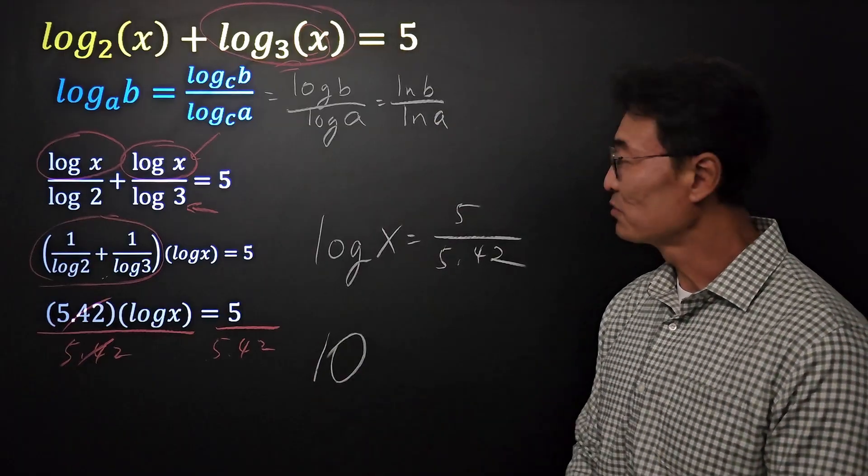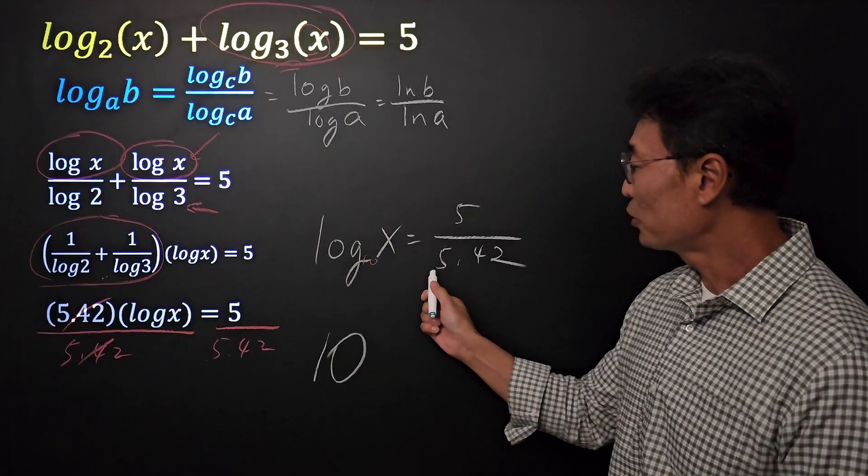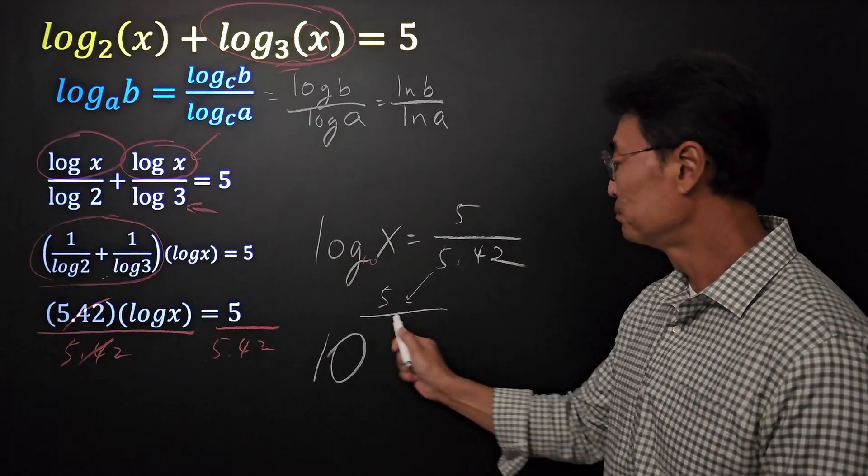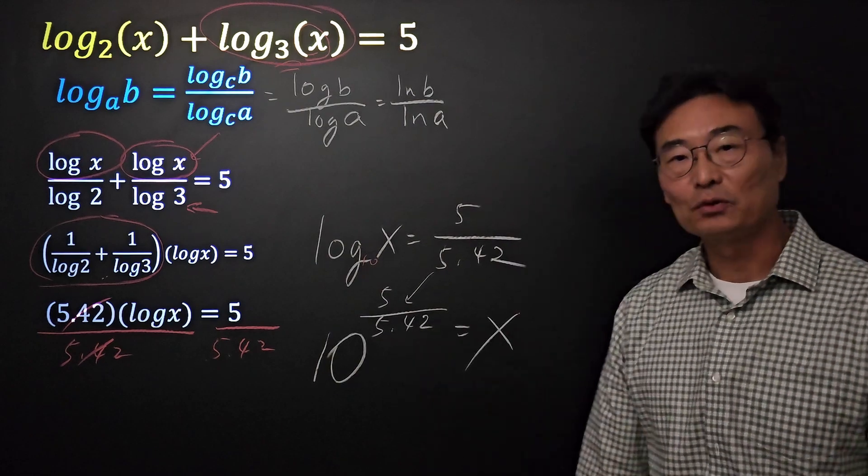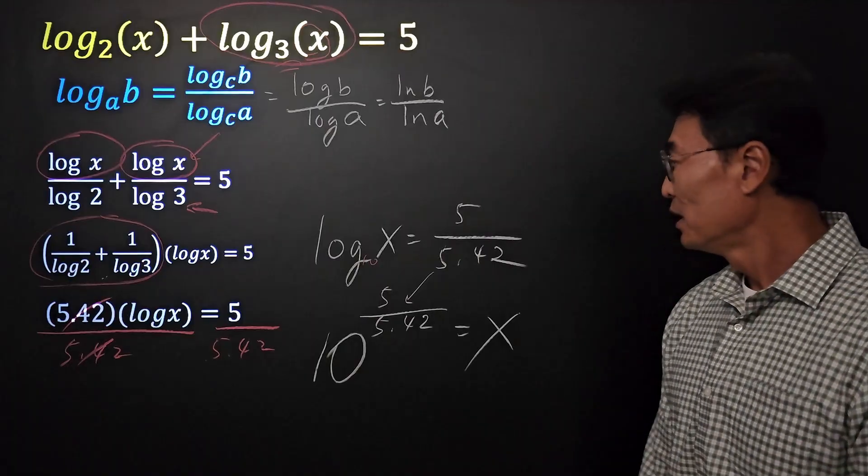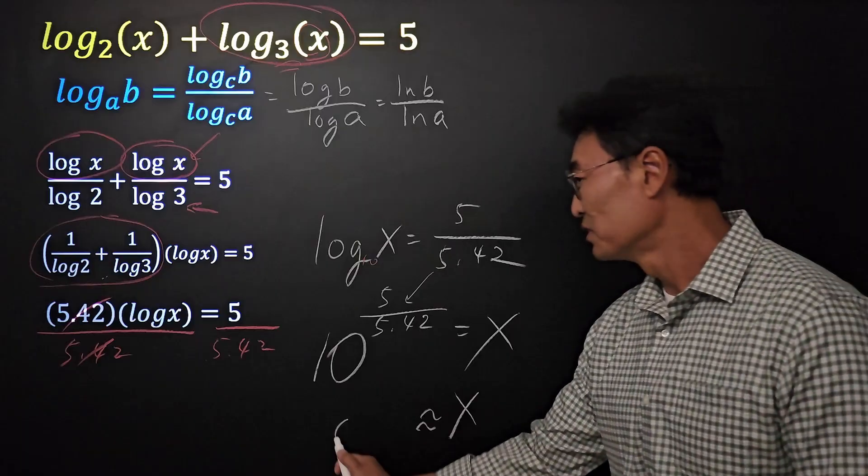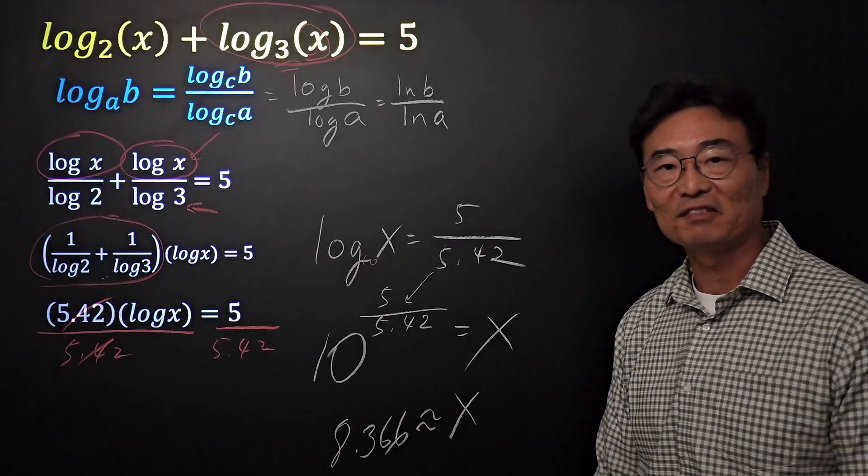We have a 10. So remember, the base of that log is 10. And then we take that exponent on the right side of the equal sign and put it up here. And of course, we set that equal to x. Then we get x approximately equals 8.366 if you round it up to 3 decimal places.